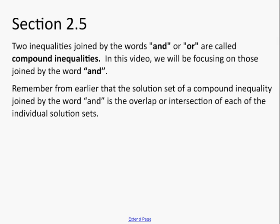Okay, two inequalities joined by the words AND or OR are called compound inequalities. In this video, we'll be focusing on those joined by the word AND. Remember from earlier that the solution set of a compound inequality joined by the word AND is the overlap or the intersection of each of the individual solution sets.